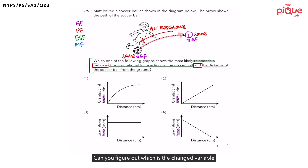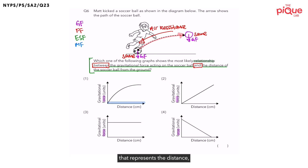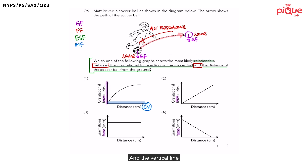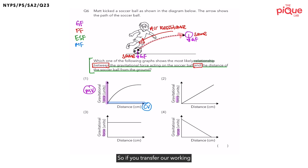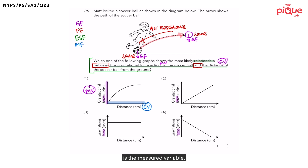Can you figure out which is the changed variable and which one is the measured variable? We can also use the graph in the options to help us. In the graph, the horizontal axis represents distance, and the horizontal axis always represents the changed variable. The vertical axis represents gravitational force, and the vertical axis always represents the measured variable. So the distance of the soccer ball from the ground is the changed variable and the gravitational force acting on the soccer ball is the measured variable.